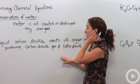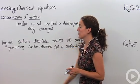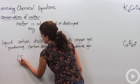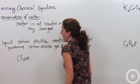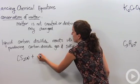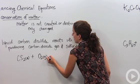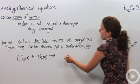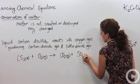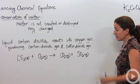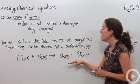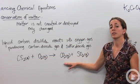Let's put this into action. We have a written chemical equation, and I'm going to write it as a skeletal equation with the actual chemicals. We have liquid carbon disulfide — CS₂, denoted as a liquid — reacts with oxygen gas, O₂, which is one of our diatomics. It yields carbon dioxide gas and sulfur dioxide gas. We want to make sure the number of elements on the reactive side equals those on the product side.